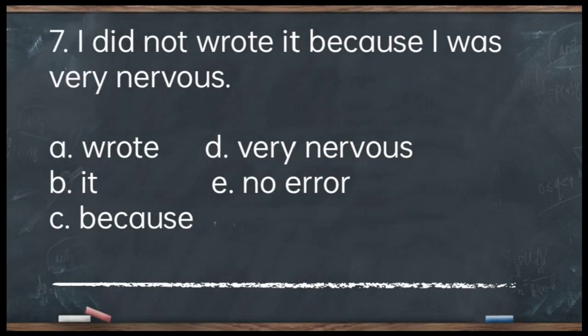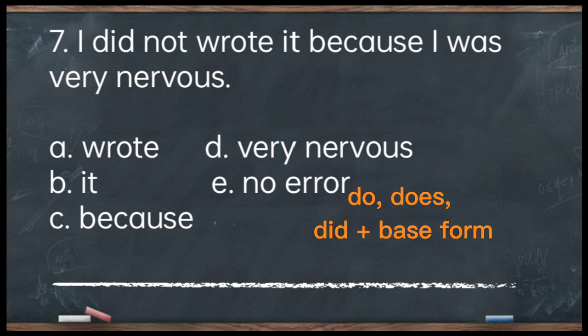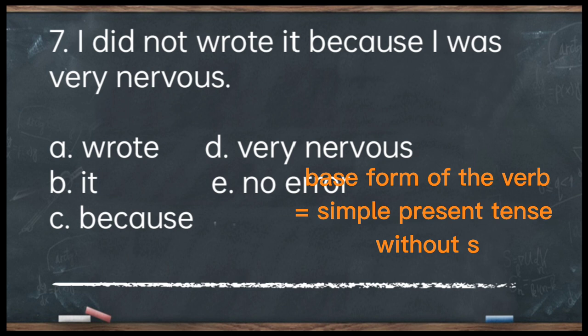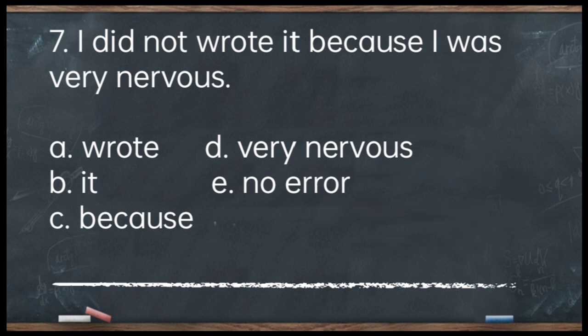Number 7. I did not wrote it because I was very nervous. A. Wrote. B. It. C. Because. D. Very nervous. E. No error. The answer is letter A — 'wrote.' The rule: if you use the helping verbs did, do, and does, the main verb should be in the base form — simple present tense without an added S, D, or ED. Corrected: I did not write it because I was very nervous. This is one of the most common mistakes students make.